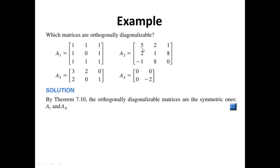Next, A2: elements on the main diagonal 5, 1, 0, 2, 2, negative 1, 1 — it's not symmetric. Since the fundamental theorem is an if and only if, if it is not symmetric, it is not orthogonally diagonalizable. A3 is not even a square matrix, so not orthogonally diagonalizable. A4 has main diagonal 0, negative 2, and across the main diagonal 0, 0 — yes, that is symmetric, so by the fundamental theorem, A4 is orthogonally diagonalizable.